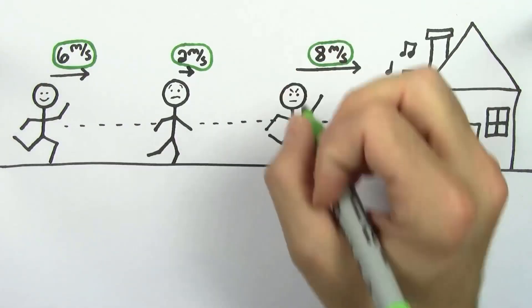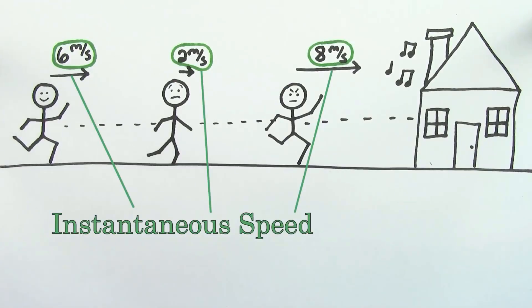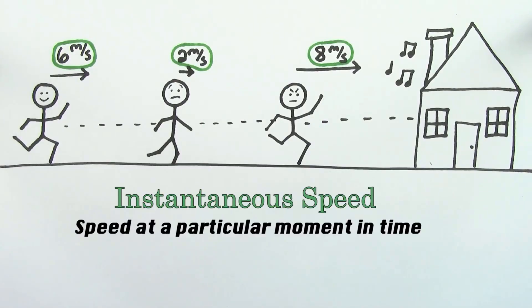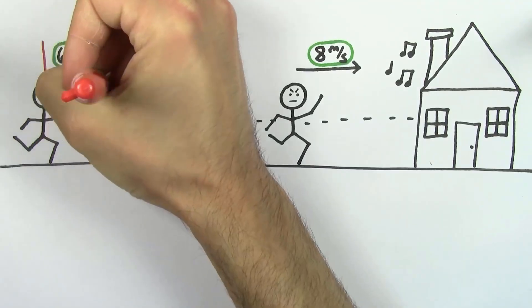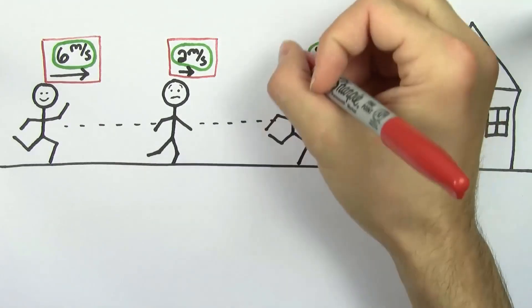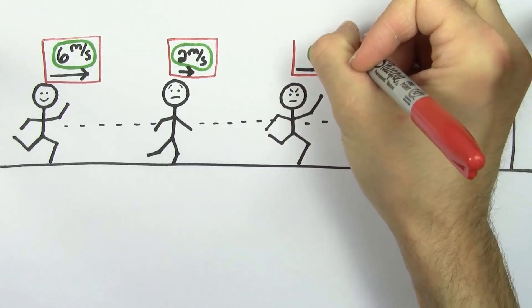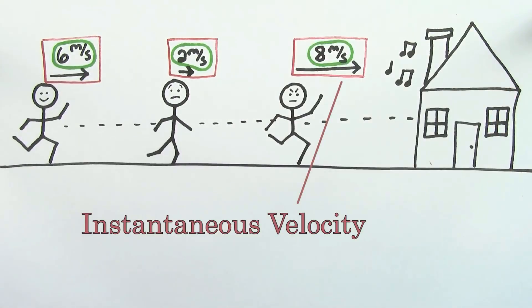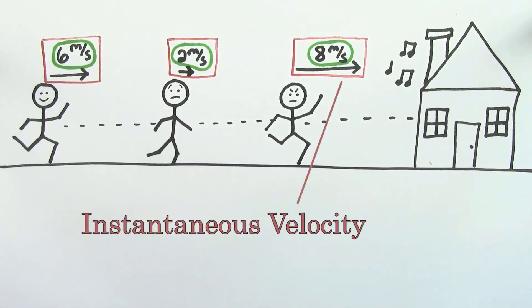These numbers are values of the instantaneous speed. The instantaneous speed is the speed of an object at a particular moment in time. And if you include the direction with that speed, you get the instantaneous velocity. In other words, 8 meters per second to the right was the instantaneous velocity of this person at that particular moment in time.